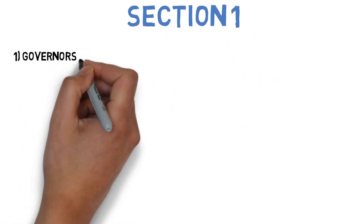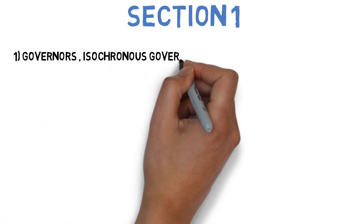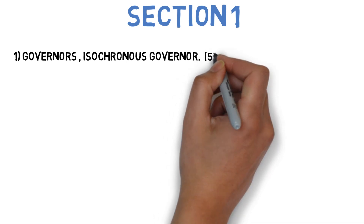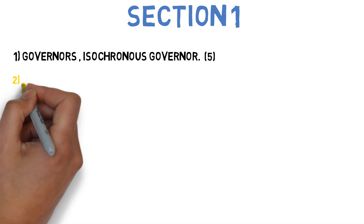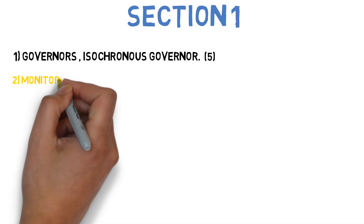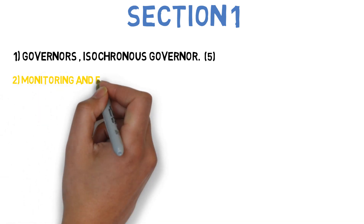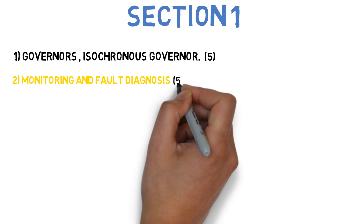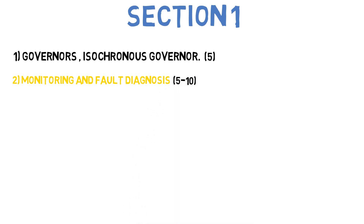In section 1, the first question is: state the different types of governors, explain suitable, unsuitable and isochronous governors. This can come for 5 marks. Next is: explain in detail condition monitoring and fault diagnosis. This can come for 5 to 10 marks.